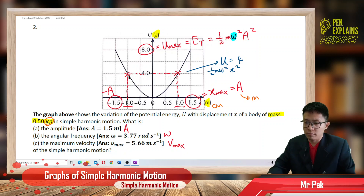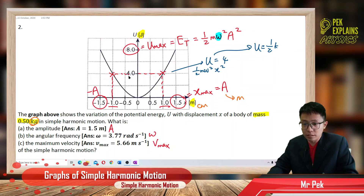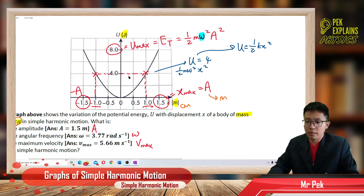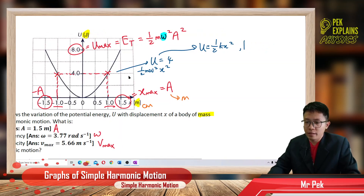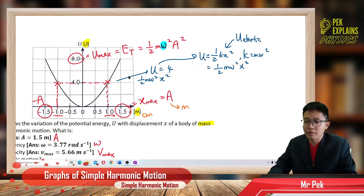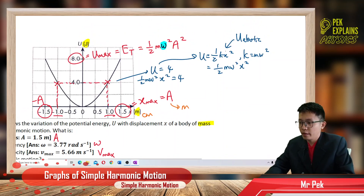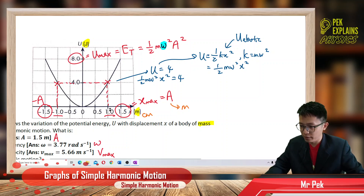Using the potential energy formula U = half m omega squared x squared — which comes from U = half k x squared where k = m omega squared — we can substitute the 4 Joule value and x = 1 meter to find omega as well.